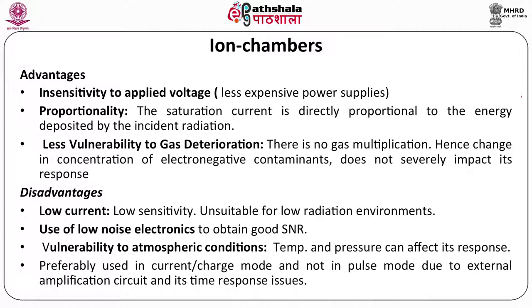The disadvantages of ion chambers include low current — there is no amplification, so inherently they are low-sensitivity detectors, unsuitable for low radiation environments. You need low-noise electronics to obtain a good signal-to-noise ratio. Another disadvantage is vulnerability to atmospheric conditions: if temperature and pressure within the detector change, the density of air changes, altering the amount of ionization produced and requiring different calibration. Ion chambers are preferably used in current or charge modes, not pulse mode, due to external amplification circuit and response time issues.